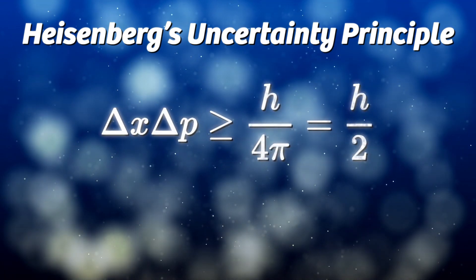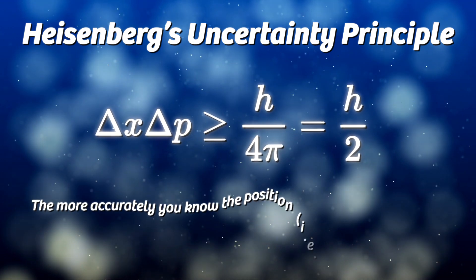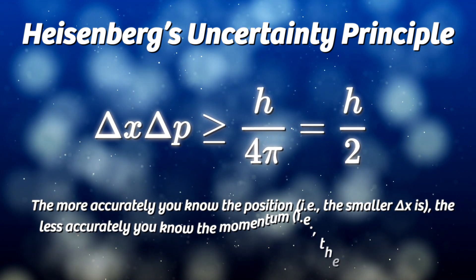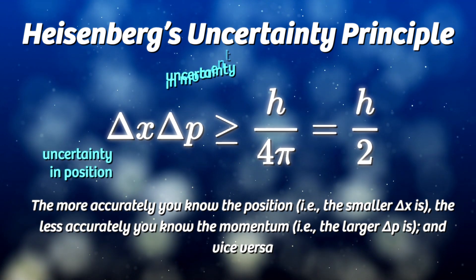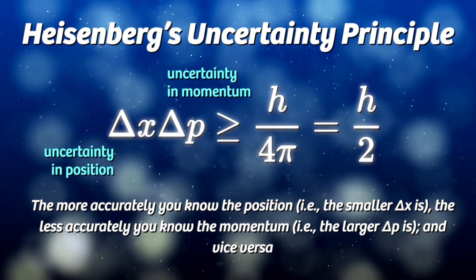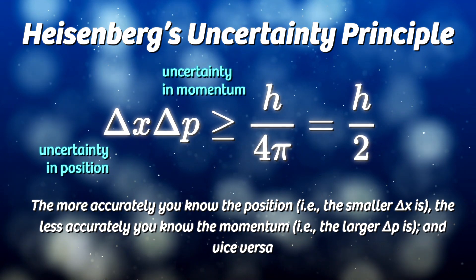Other physicists were paying attention to this and contributed more discoveries. Heisenberg, not the Breaking Bad one, for example, later proposed his uncertainty principle, which stated that the position and velocity of a particle cannot both be measured exactly at the same time, even in theory.